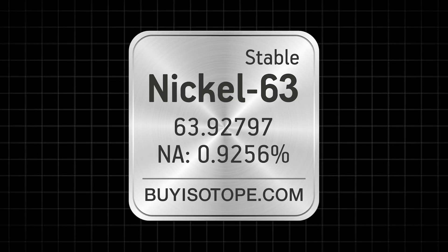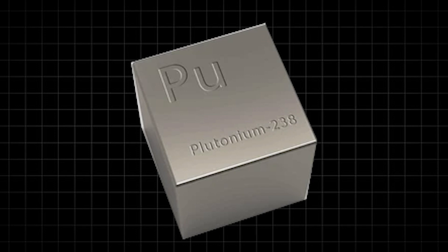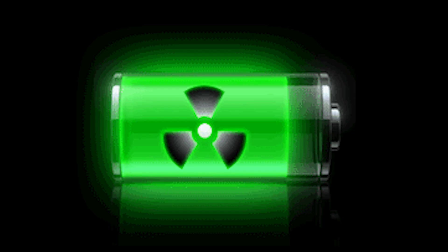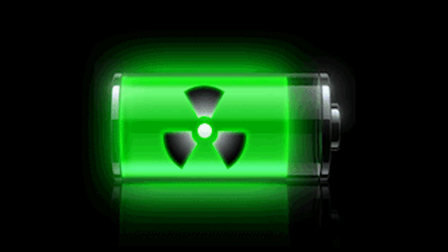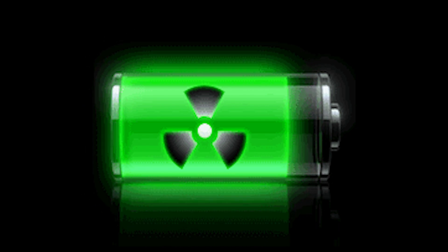For example, nickel-63 emits beta particles, which can be blocked by a thin layer of material, but other isotopes like plutonium-238 require heavier shielding. Ensuring that these batteries are safe for everyday use is a major hurdle.